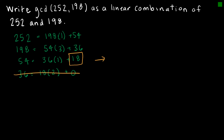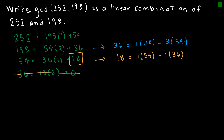Now I want to rewrite these in terms of the remainder. So 18 equals 1 times 54 minus 1 times 36. Then 36 turns into 1 times 198 minus 3 times 54. And 54 turns into 1 times 252 minus 1 times 198. These are the equations we will use, and we start at the end and work our way up.